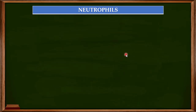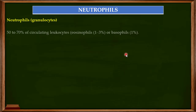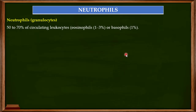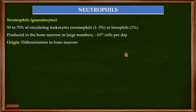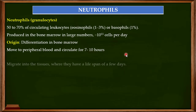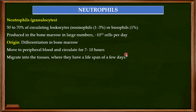We started our discussion on neutrophils, and in my last video I told you that neutrophils belong to the granulocytes. They are the most abundant of the circulating leukocytes and are produced in the bone marrow in very large numbers — billions per day — where they get differentiated. After differentiation they move to the peripheral blood, then into tissue, where they have a lifespan of a few days.